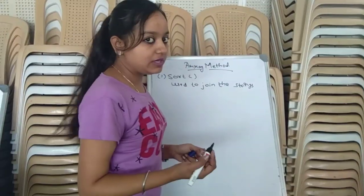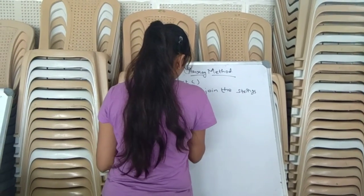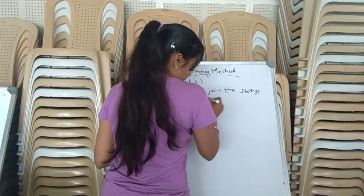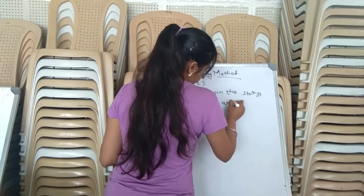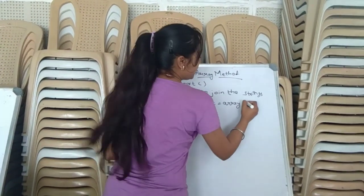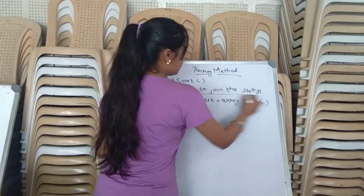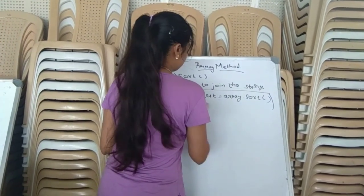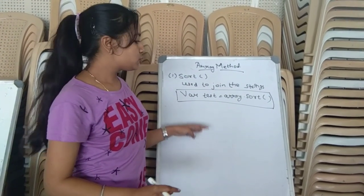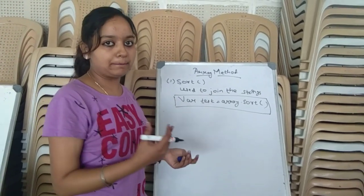First of all we will write where test equals to Array.Sort. This was the syntax of Sort Methods. So let us take an example of that.